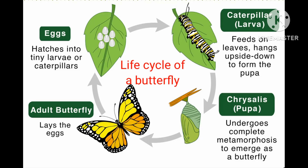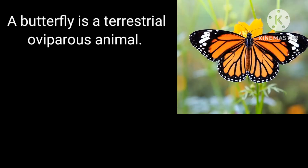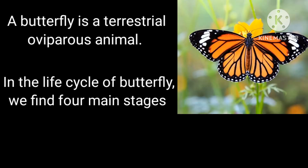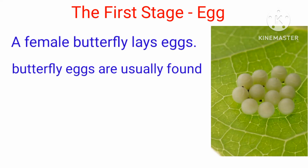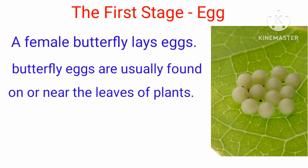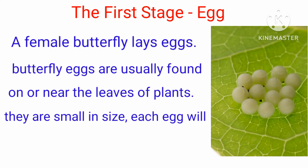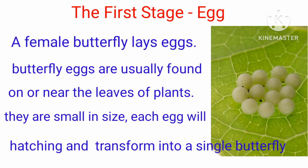Life cycle of a butterfly. A butterfly is a terrestrial oviparous animal. In the life cycle of a butterfly, we find four main stages. The first stage is the egg. A female butterfly lays eggs. Butterfly eggs are usually found on or near the leaves of plants. They are small in size, and each egg will hatch and transform into a single butterfly.